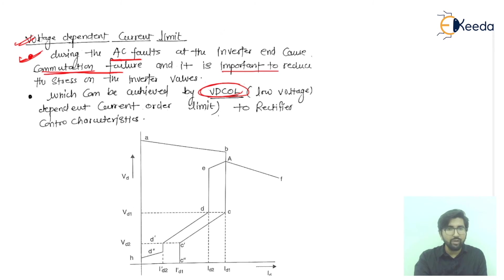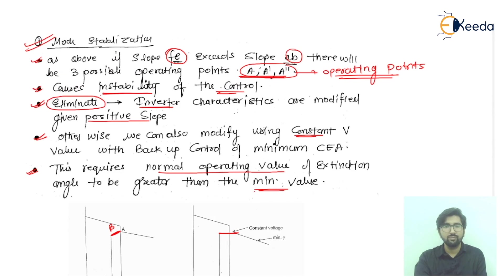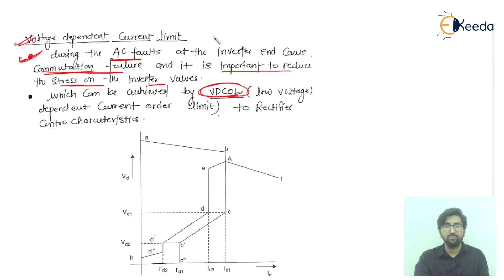We are operating within the operational area for the inverter and rectifier, but this is only a limited portion. Due to fault conditions or commutation failure, there will be stress on the inverter valves. We do not want that, and this can be achieved by VDCOL — the low voltage dependent current order limit.